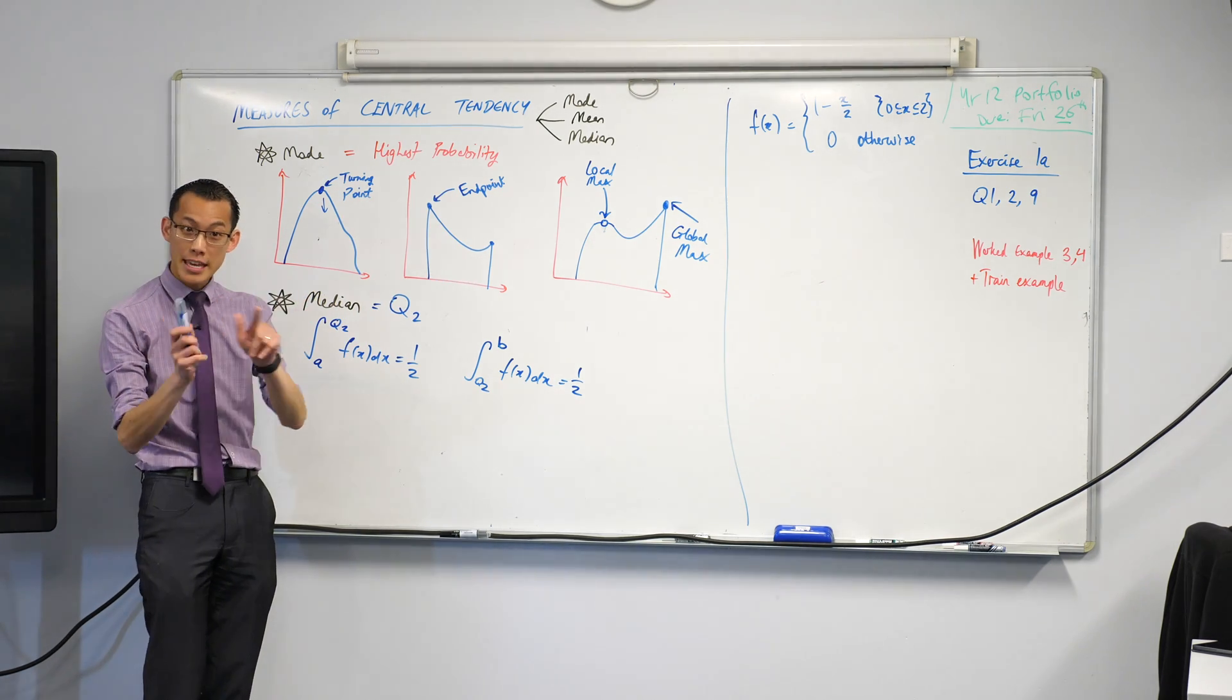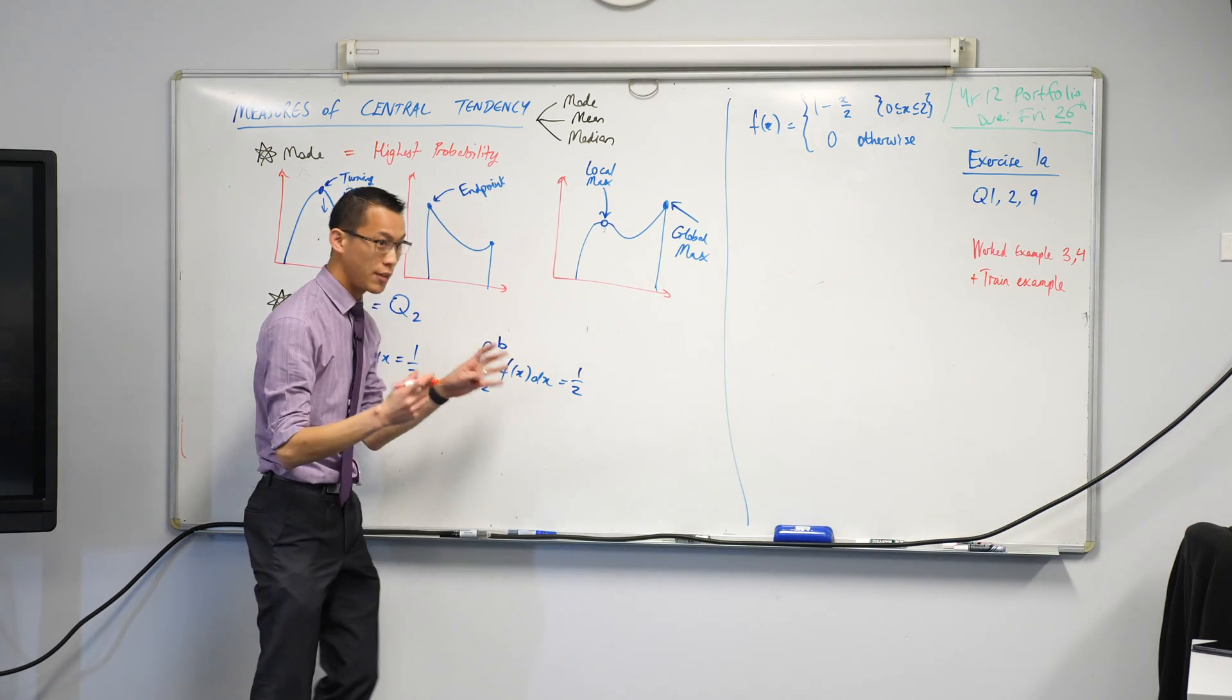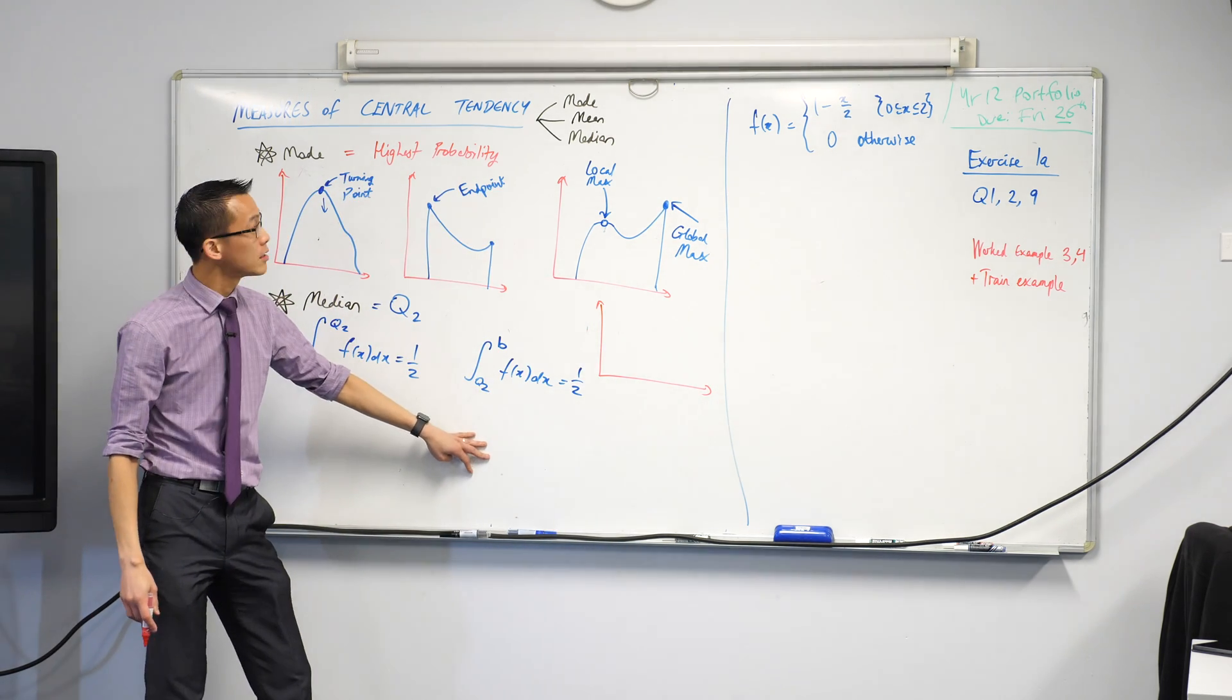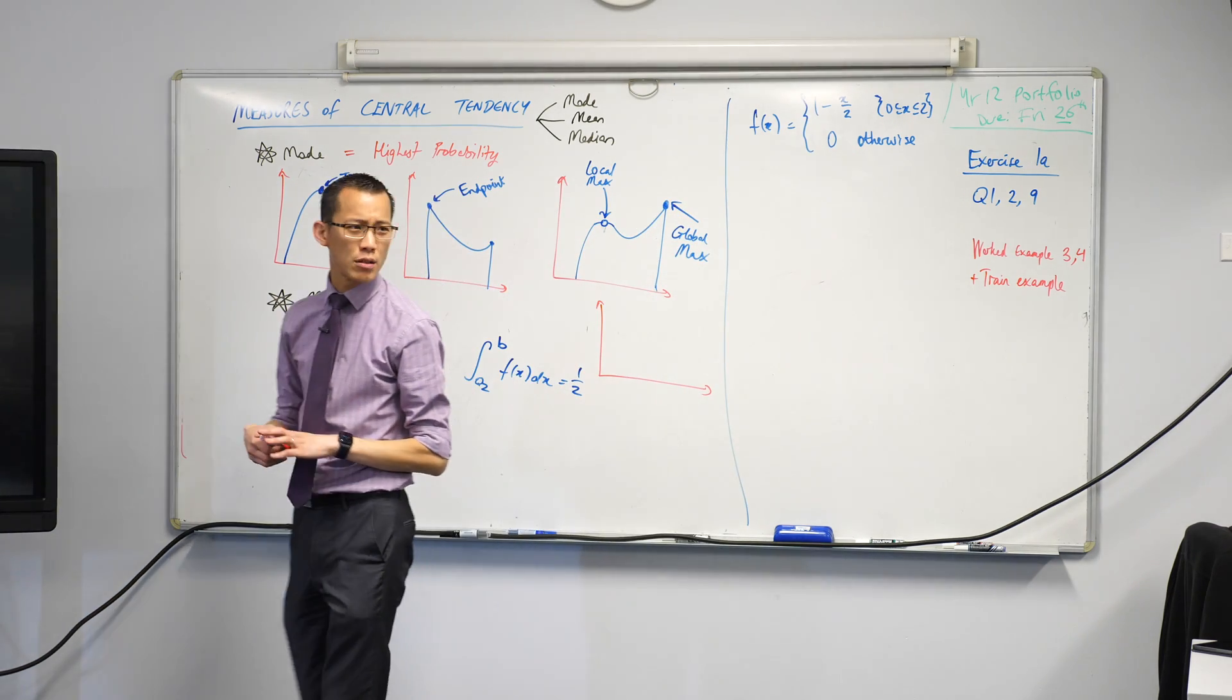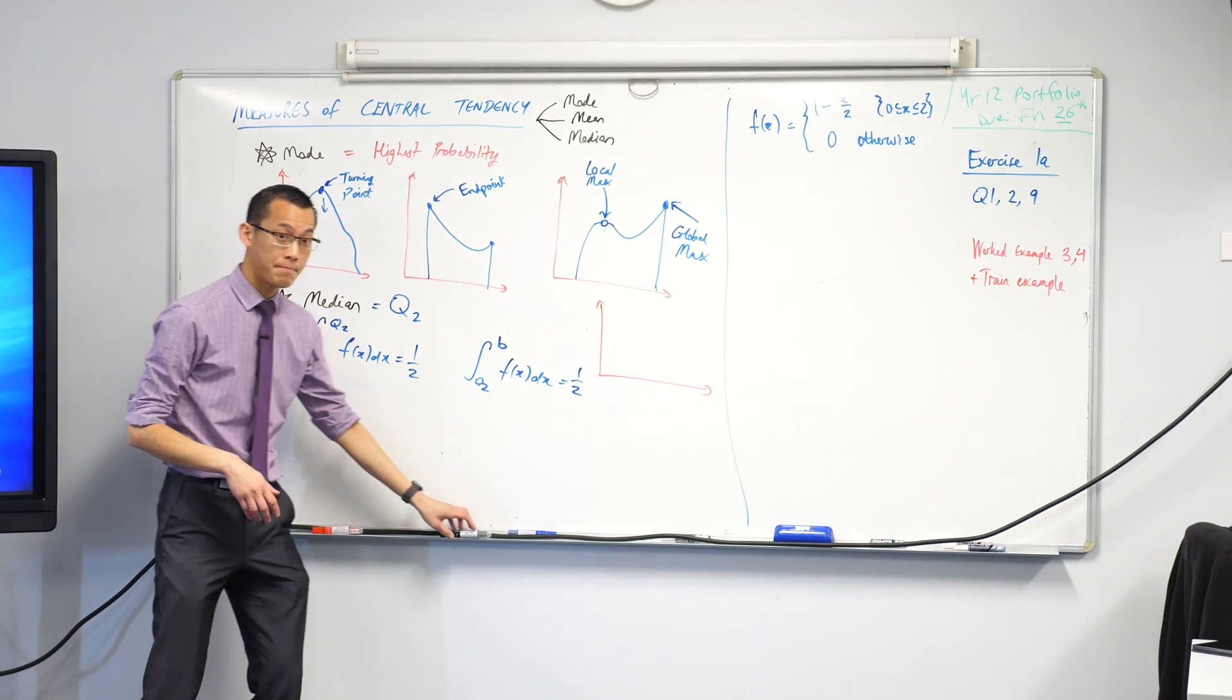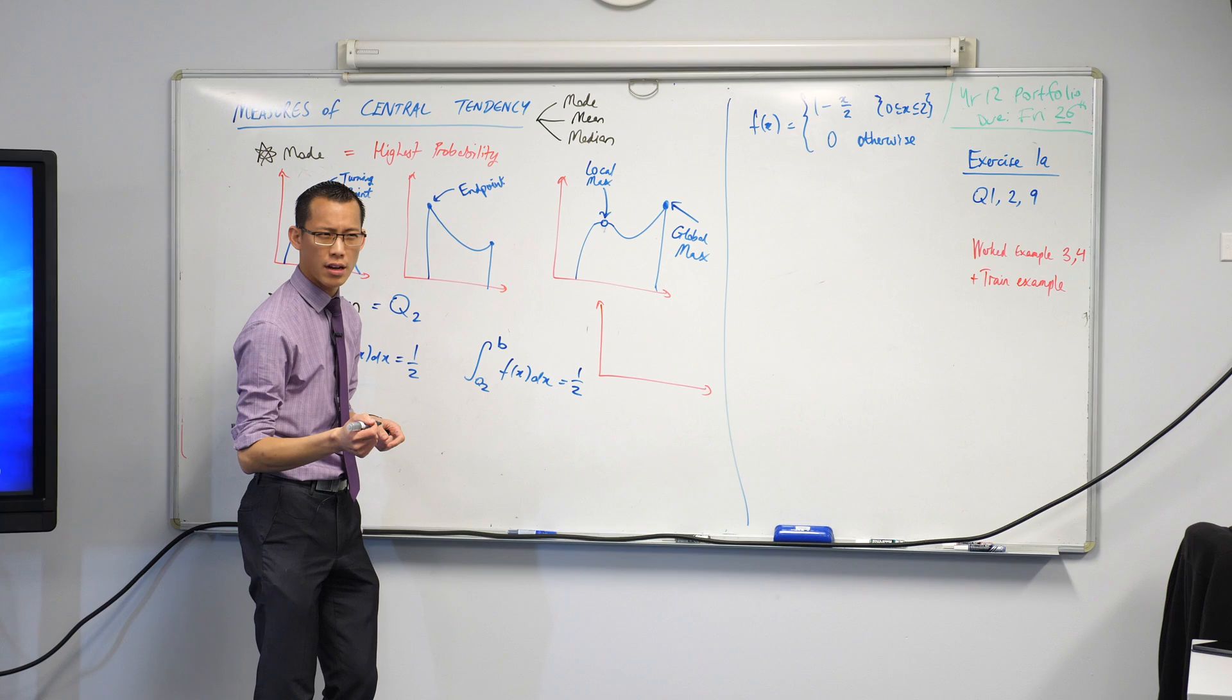How are we going to do this? Now, think about what this means, by the way, you don't have to do this, but I'm just going to give you a rough sketch of what this looks like. If I were to think about what is the shape of this probability density function, 1 minus x on 2, what is this graph? Is it a parabola? Is it a log? What is it? It's just linear, isn't it? It's just a straight line.